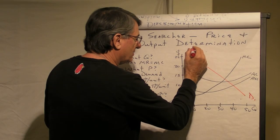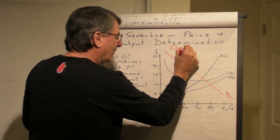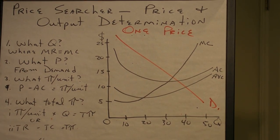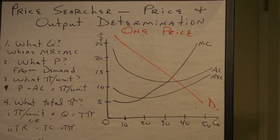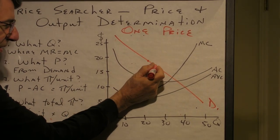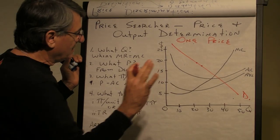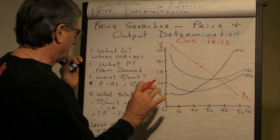And if this Price Searcher charges one price to everyone, in order to sell more units, it has to drop its price not just to the person who's only willing to buy it at the lower price, but to everyone. That's a one-price Price Searcher.